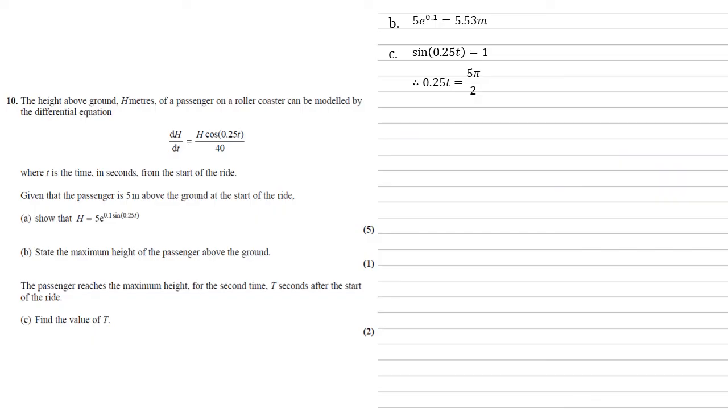Inverse sine of this means we've got 0.25t. Now if you put inverse sine of 1 into your calculator, you'll get pi over 2, but that is the first value. So that's when they reach the maximum height for the first time. The second time that sine is equal to 1 is at 5 pi over 2. Hence why we've got this equation here. Multiplying that by 4 gives us that t equals 31.4 seconds.